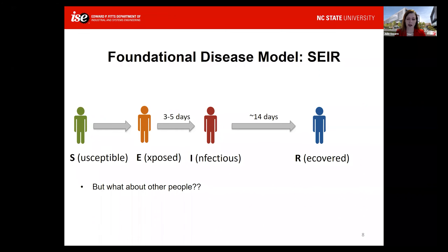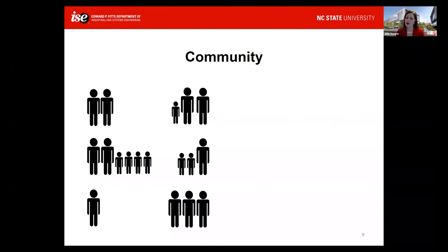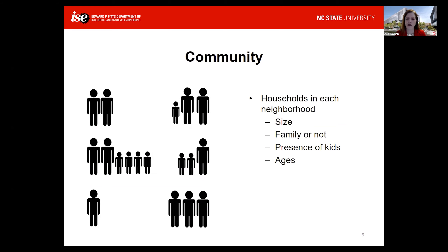Going back to the basic picture: at the very simplest it's an SEIR model, which has mathematical differential equations at its back. The standard model is deterministic — also called a compartmental model — taking either an individual or an entire population as a group. But what about a community or network of people? That's what we do in a lot of disease modeling. Here's a picture of a community with individuals living in households of different sizes, perhaps different ages. Some households have children, some do not. We can characterize these according to whatever values exist in the particular community of interest.